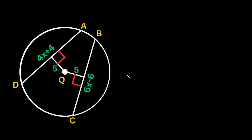Let's do one more example. In this circle we're given two chords again, but this time we're not given their lengths — just expressions. However, we are given the distance from each chord to the center: it's 5 for both. Since the two chords are the same distance from the center and both form right angles, the two chords are congruent, meaning they're equal to each other.